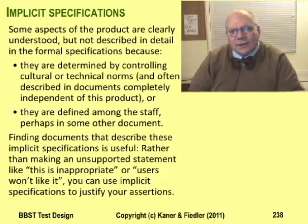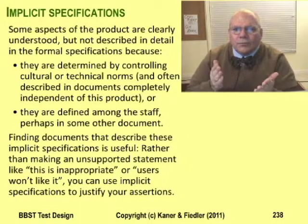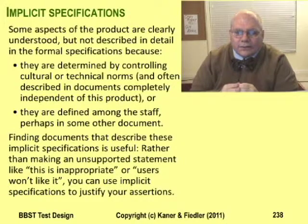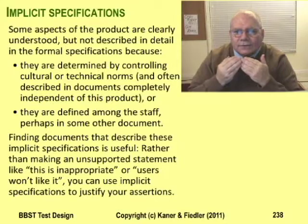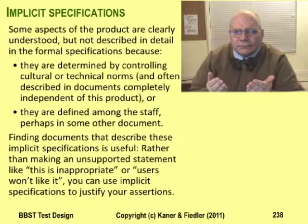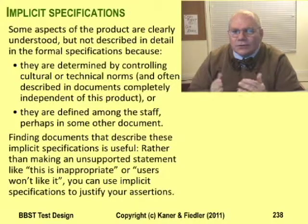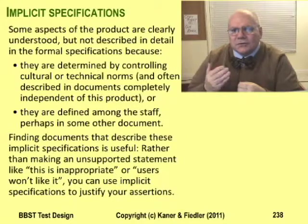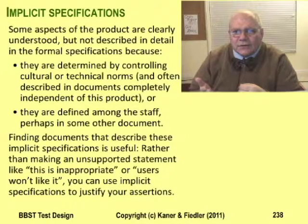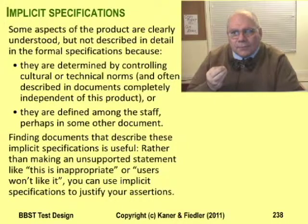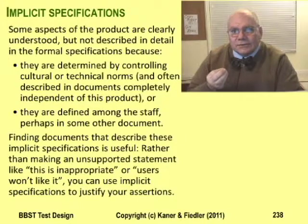I talked about this in the bug advocacy course. What I said there was: you're probably not seen as an expert in the design of the product, so if you want to make effective criticisms, you have to tie them to a credible source. The spec is a potentially credible source, but that's not going to help you with something that's not in the spec, or worse, with something the spec describes as acceptable. If you find yourself in this situation, don't whine that no one will listen — look for an implicit specification instead. An implicit spec is a source that's not part of the official specification, but that programmers or other stakeholders with influence will accept as authoritative.